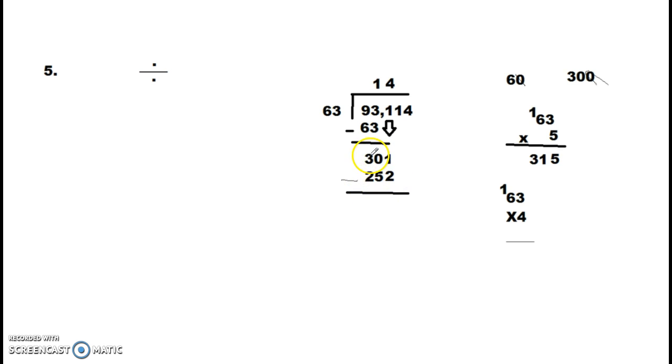We can't borrow from 0, so we have to go to the next number, which is 3. This becomes 2. This becomes 10. We're going to borrow from this 10, make it a 9. And this becomes 11. So 11 minus 2 equals 9. 9 minus 5 equals 4. And 2 minus 2 equals 0. So we're done. But we have more numbers to work with, so we have to bring this number down. So now this becomes 491.